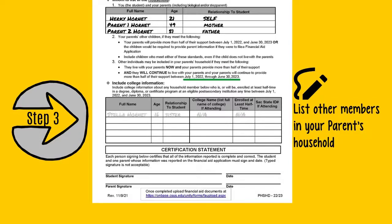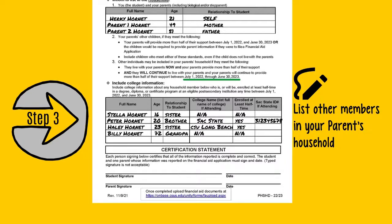Step 3: List your parents' other children if they meet the following criteria. Your parent will provide more than half of their support between July 1, 2022 and June 30, 2023. Or, the children are required to provide your parents' information if they were to file a financial aid application. Include children who meet these standards even if they do not currently live with your parents. You can also list any other individuals in your parents' household if they live with your parents and your parents provide more than half of their support now and will continue to between July 1, 2022 through June 30, 2023.